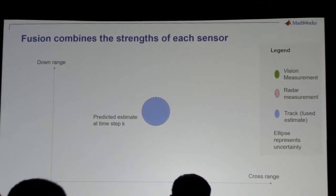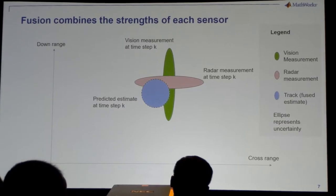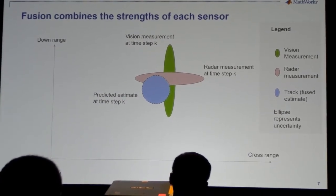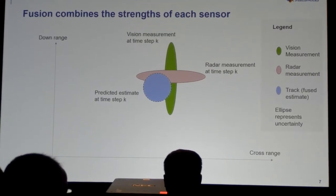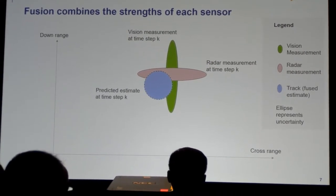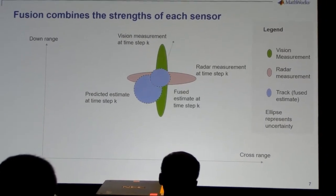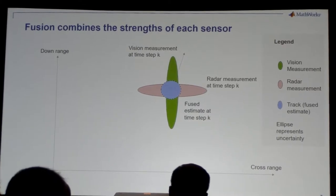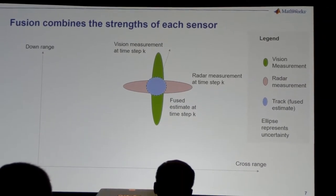We start with the measurement and prediction from the previous time step. The next thing we do is predict ahead to the coming time step — we have some idea of the motion of the system we're tracking and project ahead in time. We then get measurements from the sensors, and each sensor has its own strengths and weaknesses. One sensor is better in one dimension, maybe the other is better in another. With sensor fusion, when we combine those, we get an answer that's better than the individual sensors.